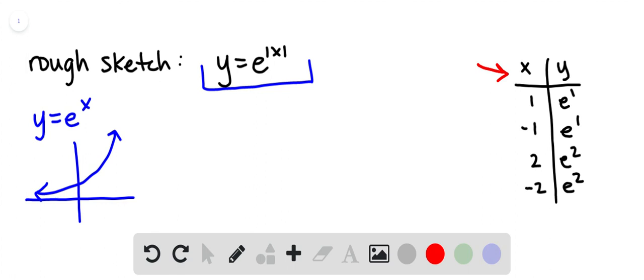If x is 2, we would be finding e to the second. But if x is negative 2, we would take its absolute value, and then we would find e to the second.